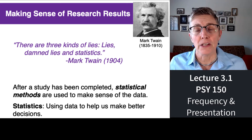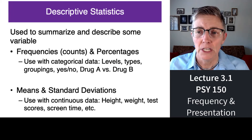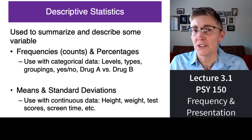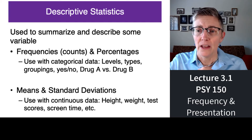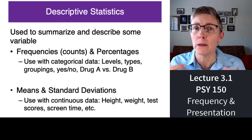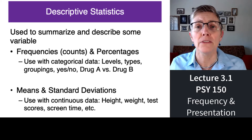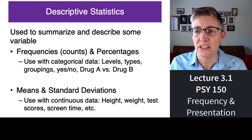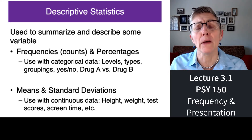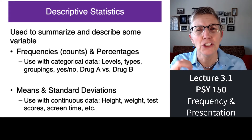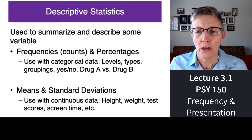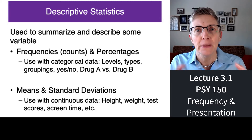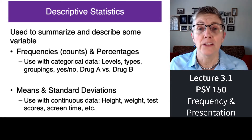Descriptive statistics — how do you describe the data that you've collected? There are a lot of different ways to do it. We're going to talk about the simplest ones. We'll talk about frequency distributions, which is essentially counting the number of responses or events that have happened and displaying that in an easy-to-understand way. We're going to talk about measures of central tendency — simple calculations to get a rough sense of what the average response was. And we're going to talk about variance — how much variability in the data you collected there is.